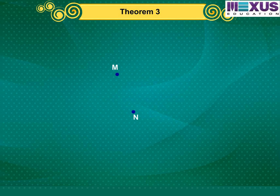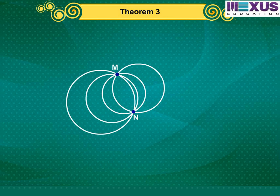Now, take two points, M and N. Here also we can see that there may be an infinite number of circles passing through M and N.